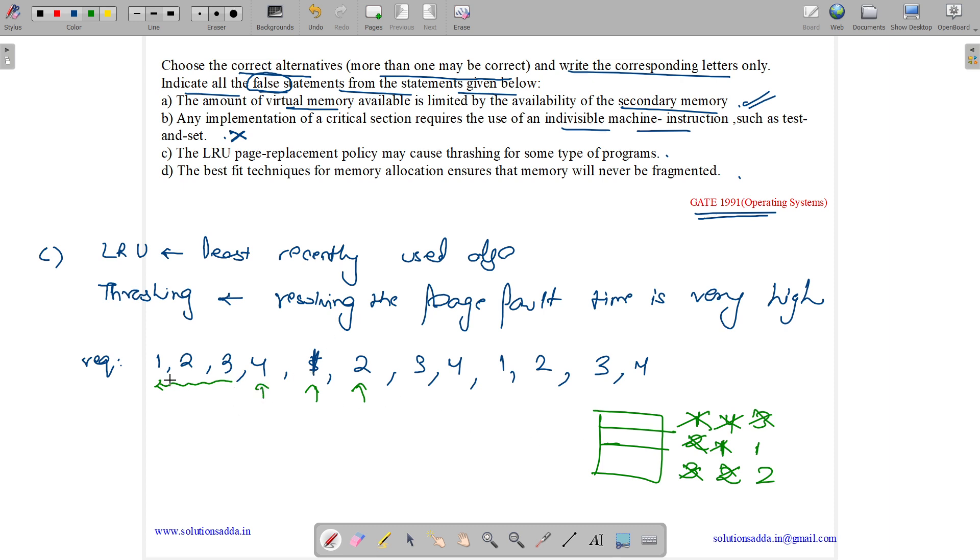This happened because after 1, 2, 3, when 4 came, so when we removed 1 for 4, then again 1 was referred in the next clock cycle. So if the removed page is referred again in the next iteration, then the LRU page replacement policy will cause thrashing. So option C is also true.